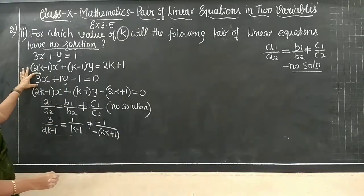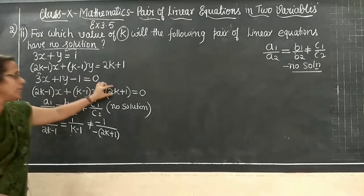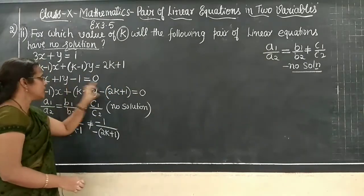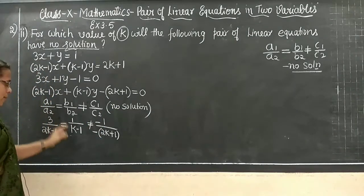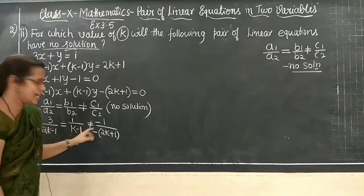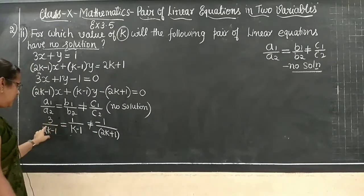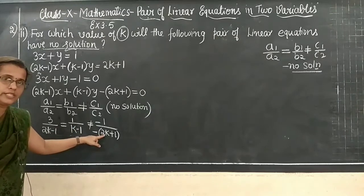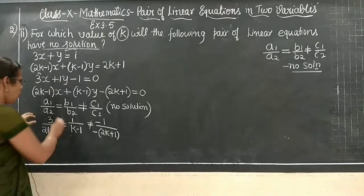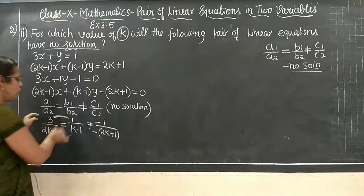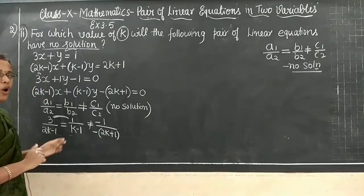Now, there is an equal sign between the first two ratios and a not-equal sign for the third. When there is a not-equal sign, compare only the first two ratios — not the third. The not-equal condition means that combination cannot be used to find K. So take the equal condition and find the value of K.